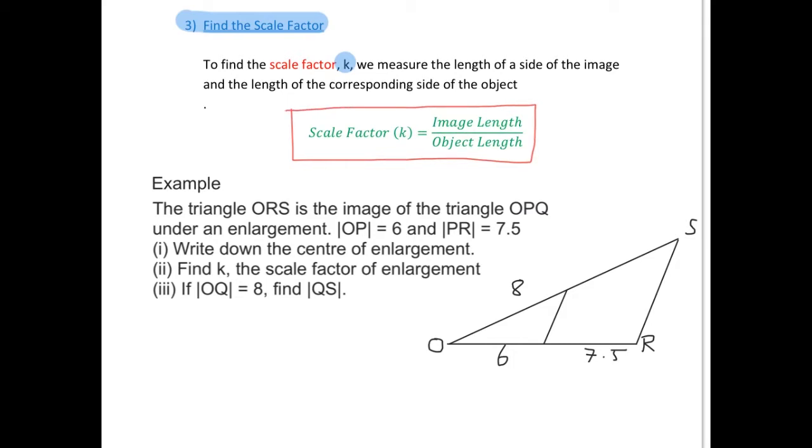We will do an example of this now where we are told that the triangle ORS is the image of the triangle OPQ under an enlargement. We are told that the length of OP is 6, the length of PR is equal to 7.5, and we are asked first to write down the centre of enlargement and to find k, the scale factor of enlargement.